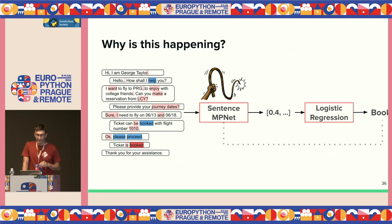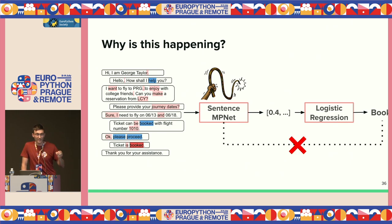We've never taught our model how a booking conversation looks like. So how to fix it?